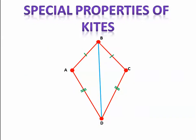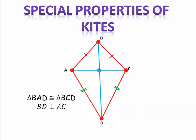The long diagonal of a kite separates the kite into two congruent triangles. Triangle ABD is congruent to triangle CBD. And because triangle BAD and triangle BCD are congruent, it can be shown that the diagonals of a kite are perpendicular — BD is perpendicular to AC. Therefore, we get four right angles.